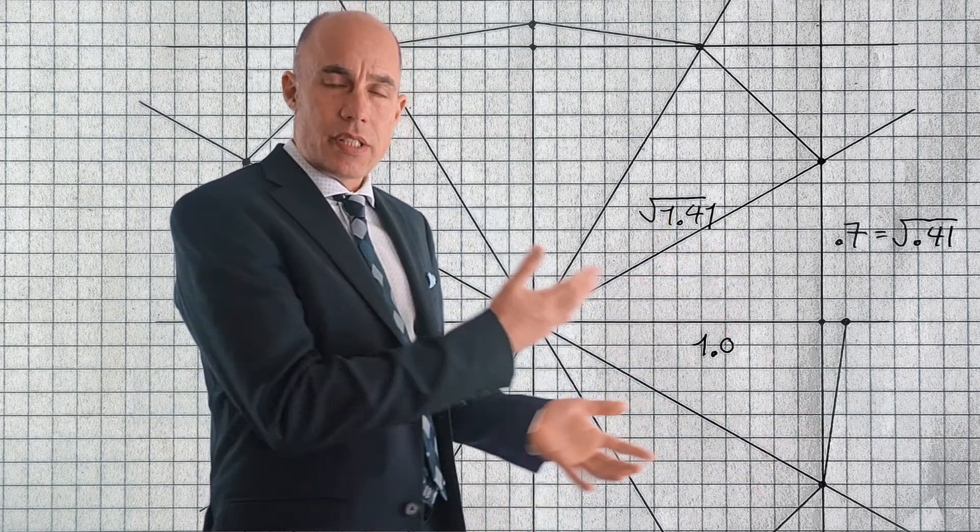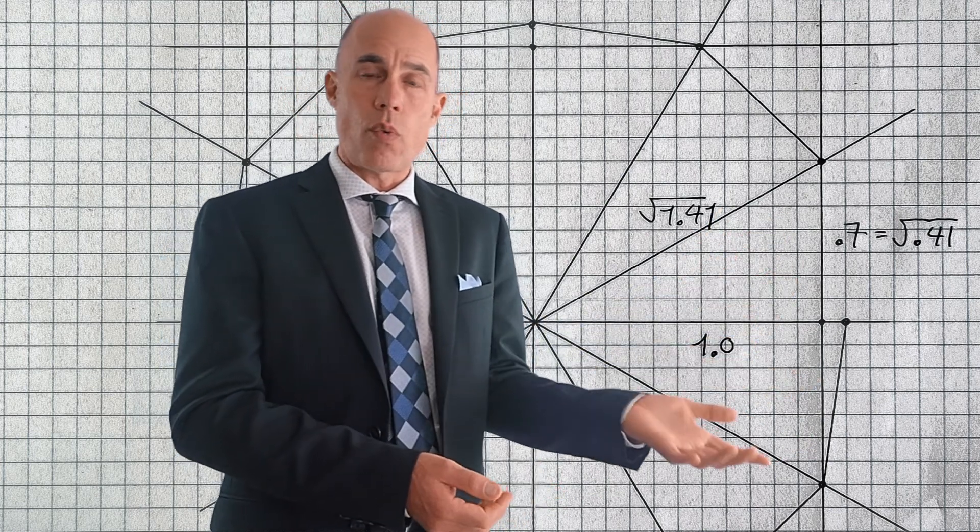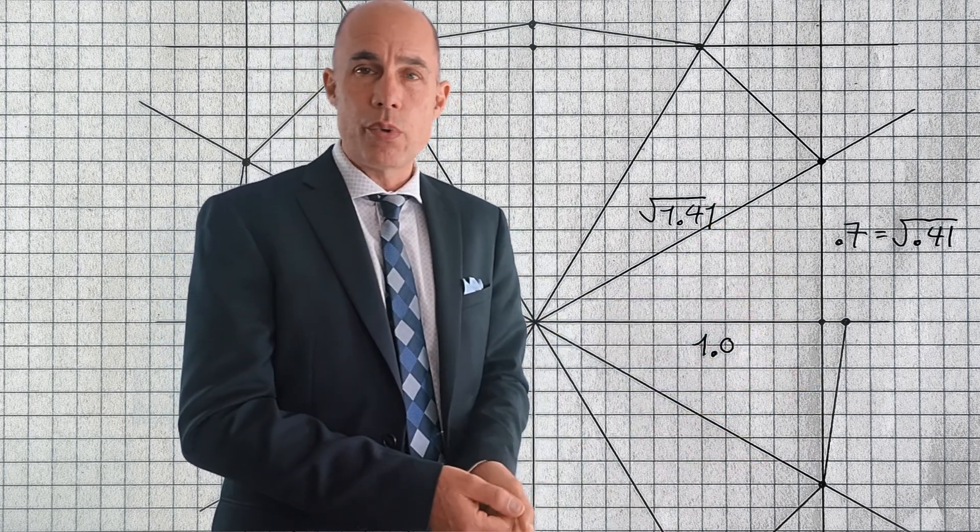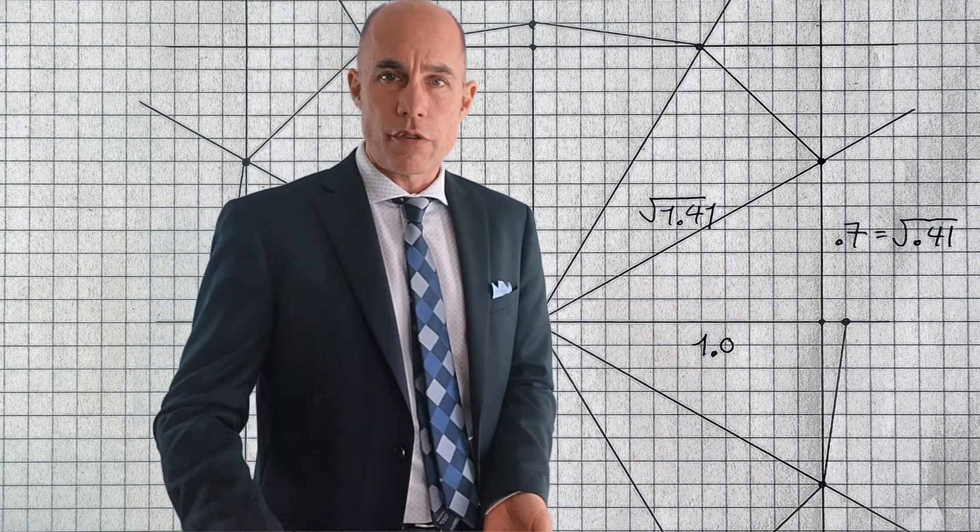Okay, so you can see the dimensions here: 1 then up 0.7 squared is 0.41, so that length there is a square root of 0.41 and the hypotenuse of this triangle is a square root of 1.41.